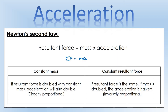Newton's second law states that resultant force equals mass times acceleration: F = ma. If we keep mass the same and double the resultant force, acceleration must also double — the classic condition for a directly proportional relationship. If we keep resultant force constant and double the mass, acceleration must halve, since their product must remain the same. That's the classic condition for an inversely proportional relationship. This is why we expect those two results from the experiments.